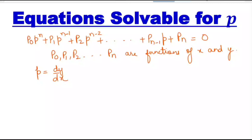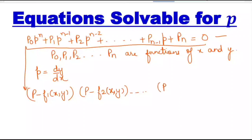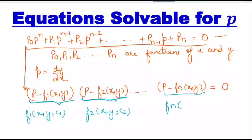To solve such equations, we first check for factors. Assuming the given differential equation has factors of the form (p − F₁(x,y)), (p − F₂(x,y)), and so on up to (p − Fₙ(x,y)). We equate each factor to zero and solve. From each factor we get solutions F₁(x,y,C₁), F₂(x,y,C₂), and so on up to Fₙ(x,y,Cₙ). These are all the factor solutions.